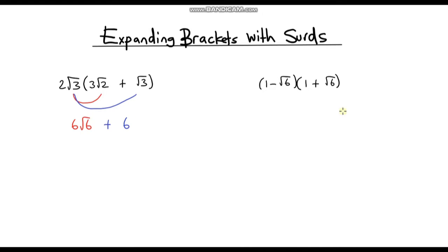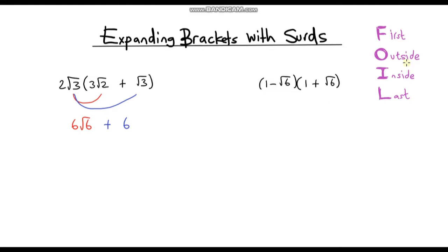And that is our answer. Now let's look at the second example, which is slightly different because we've got double brackets. When expanding double brackets there are a couple of methods you can use. A lot of people like to use the FOIL method — First, Outside, Inside, Last — meaning you multiply the first two terms, the outside terms, the inside terms, and finally the last terms. So there are four things to multiply.